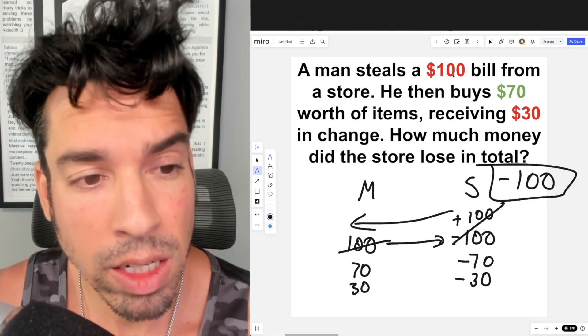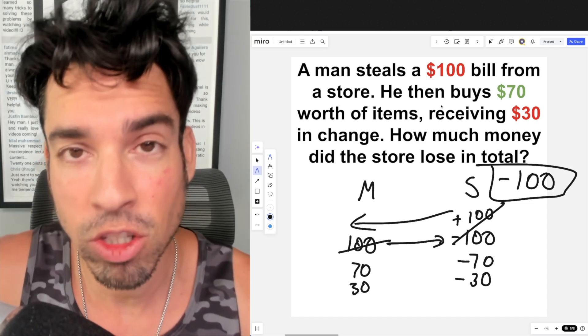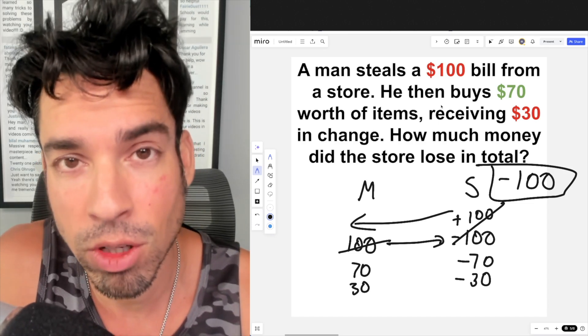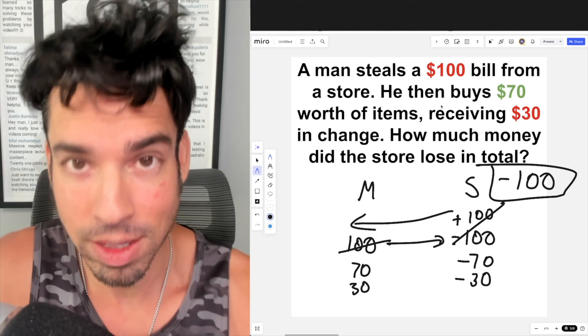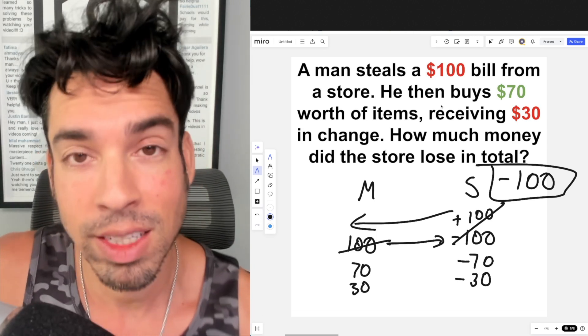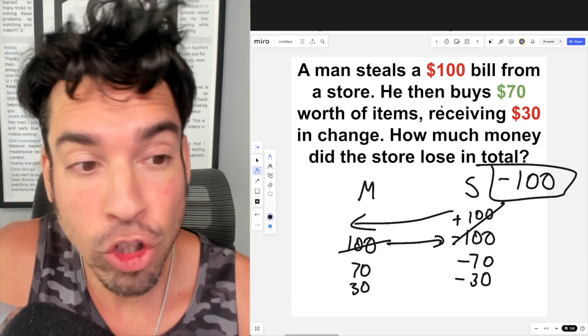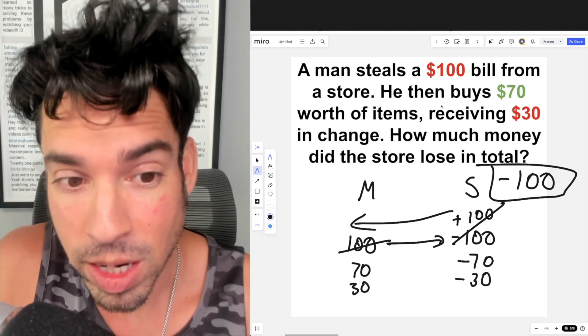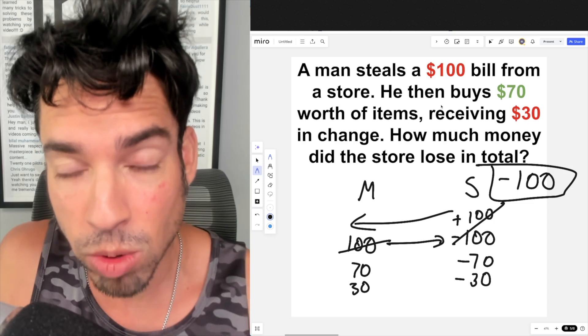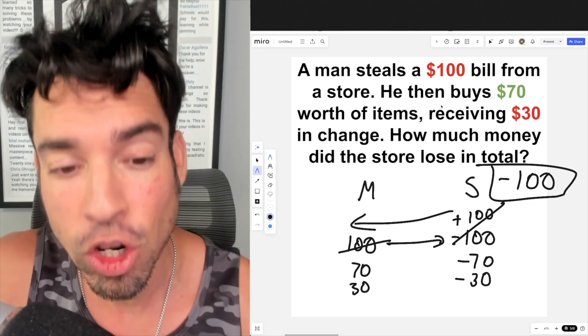The other way to think about it is: once the man steals the $100, every transaction thereafter is just an exchange, it's not a stealing or a taking. For example, he's giving $70 to get $70 worth of goods, so it's net even. And again, that change is really $30 for $30 - it's an excess of $30 that he's paying through the $100 bill, so he's just getting $30 back. Once again, it's an exchange which is a net change of zero.